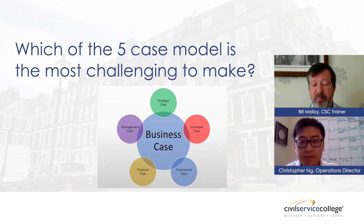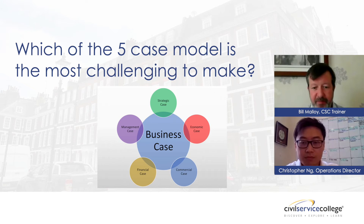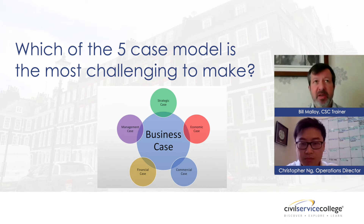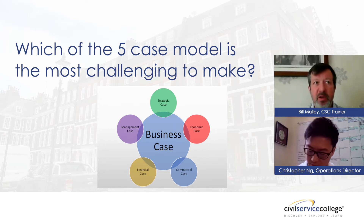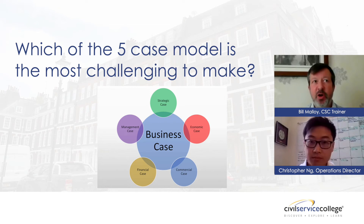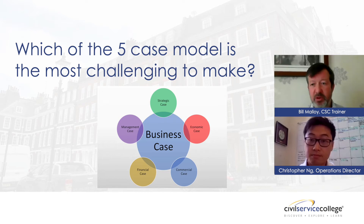The biggest case in there is the economic case, because the economic case is the one where you're trying to evidence value for money for the economy as a whole — for the government as a whole. It's also the case where you start off with a framework — the options framework — and you're trying to understand how many options you have. That can be a dozen options or maybe even fifteen, depending on what you're trying to do. Trying to narrow that down in a planned and progressive way is a bit of a nightmare.